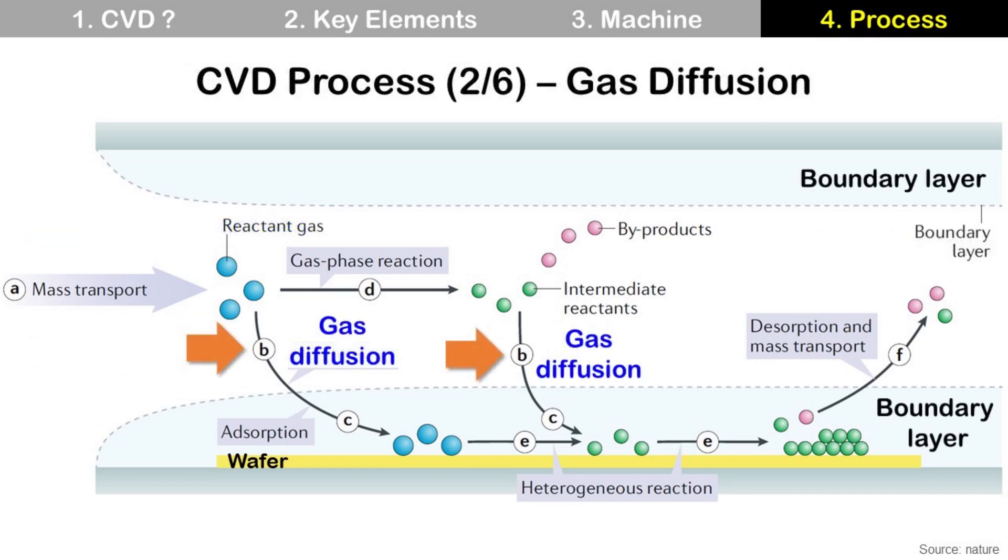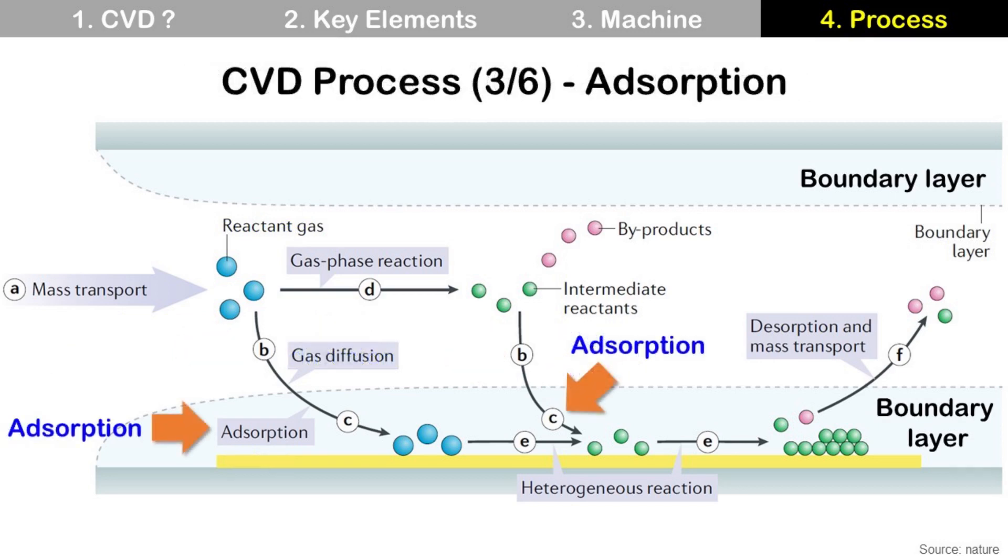Step B, gas diffusion. Reactant gases directly diffuse through the boundary layer. Step C, adsorption. Reactant gases adsorb onto the substrate.